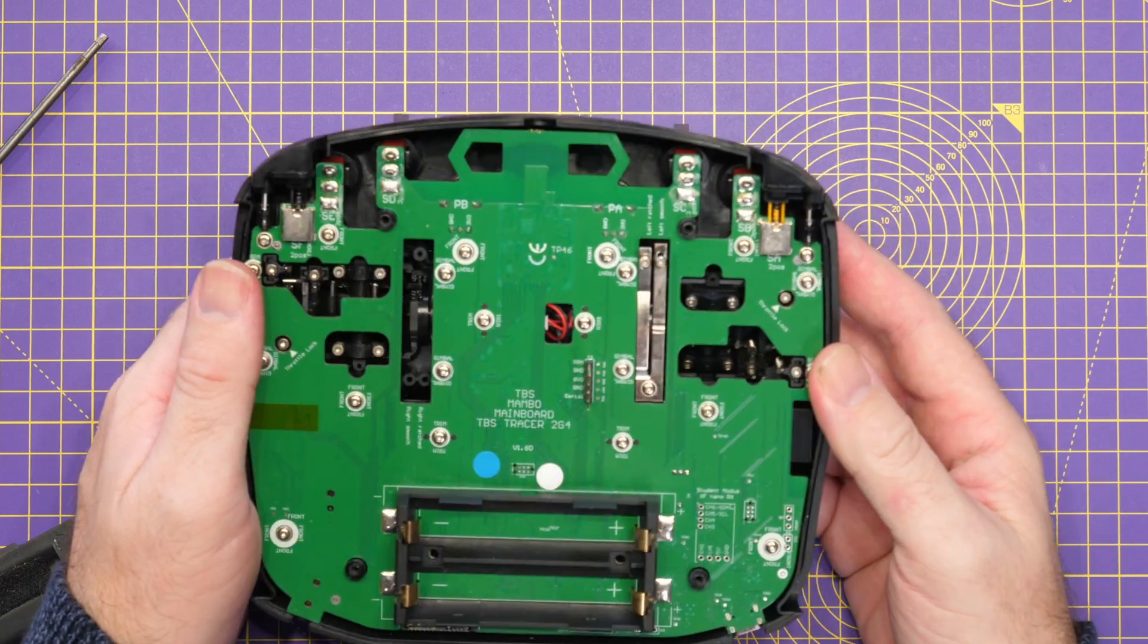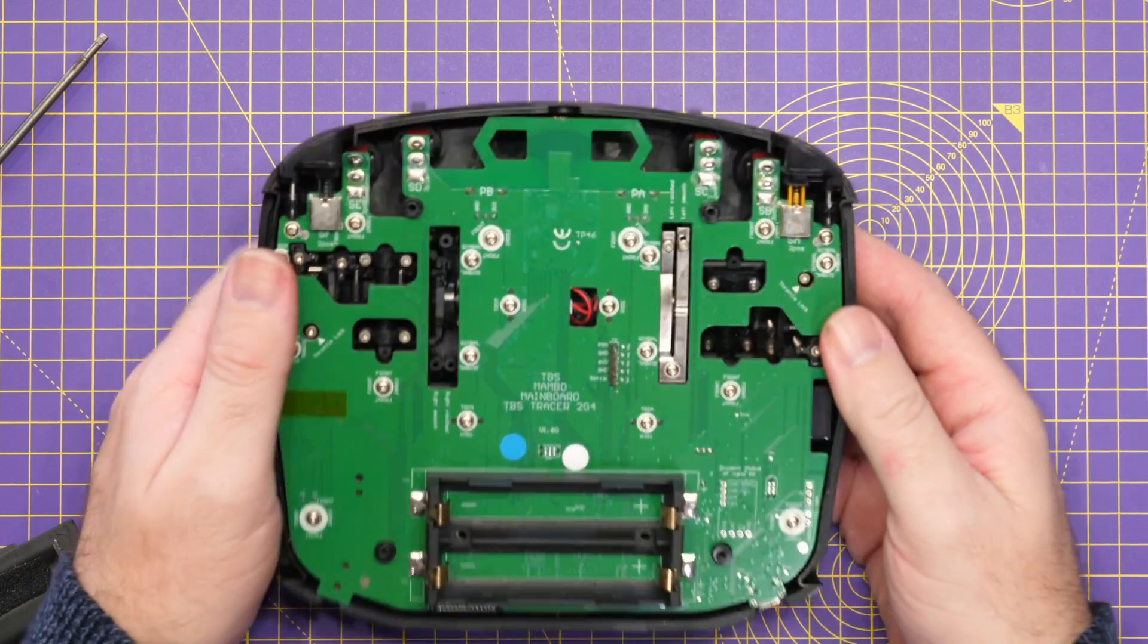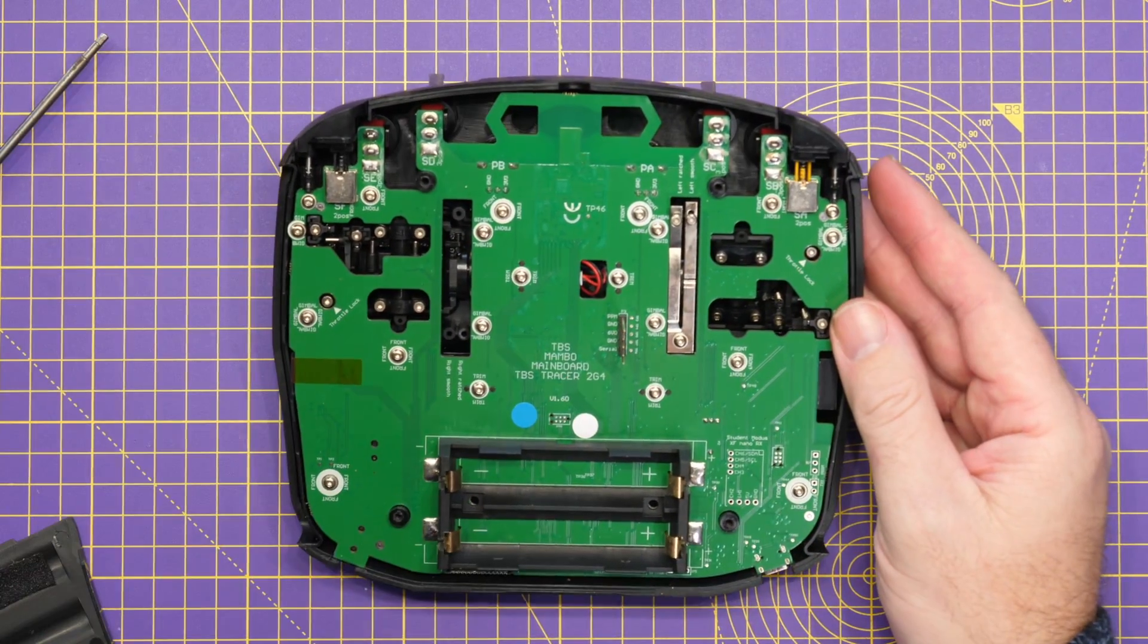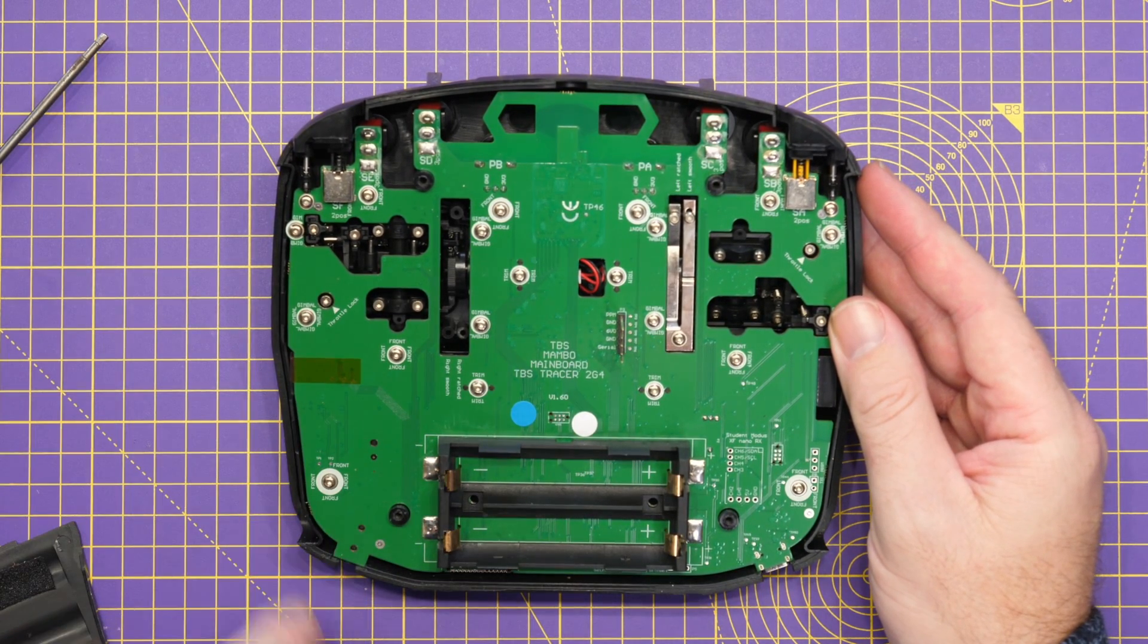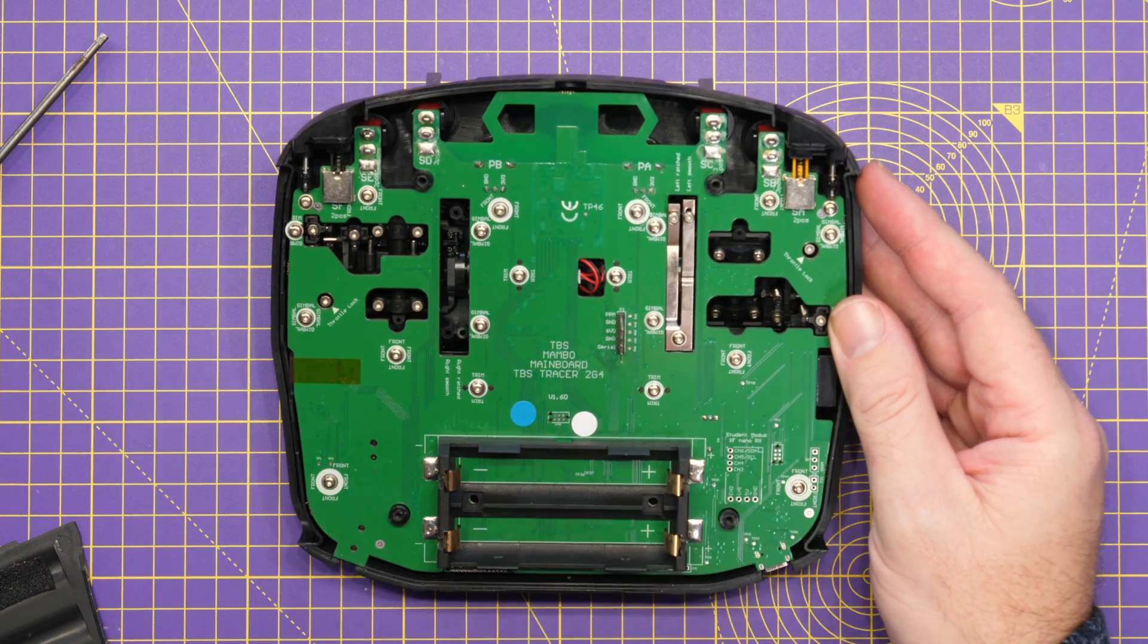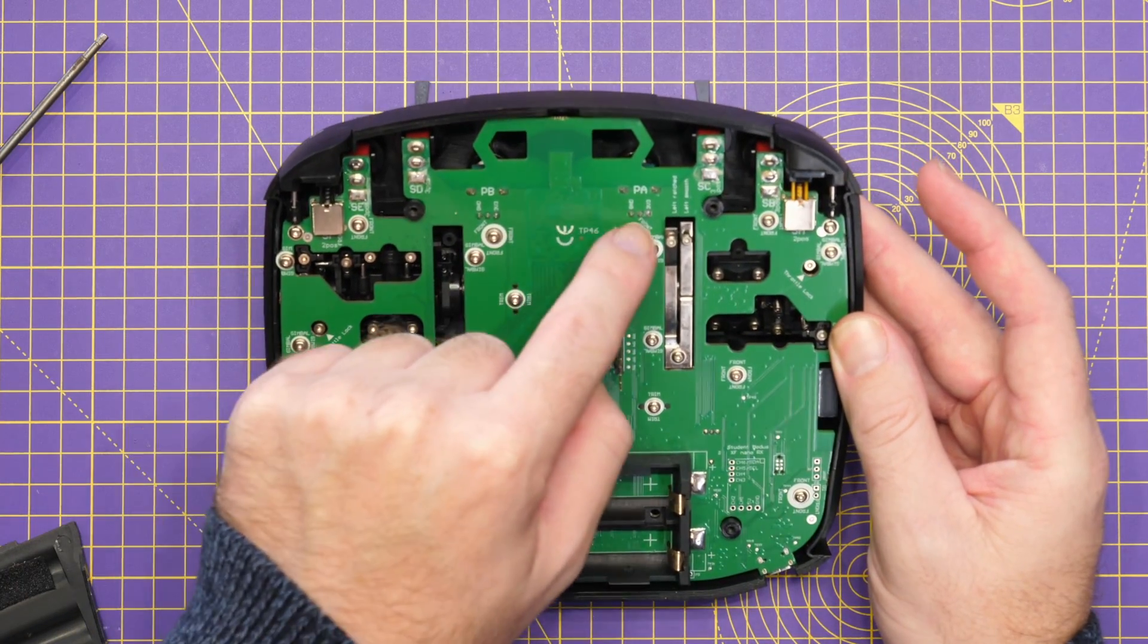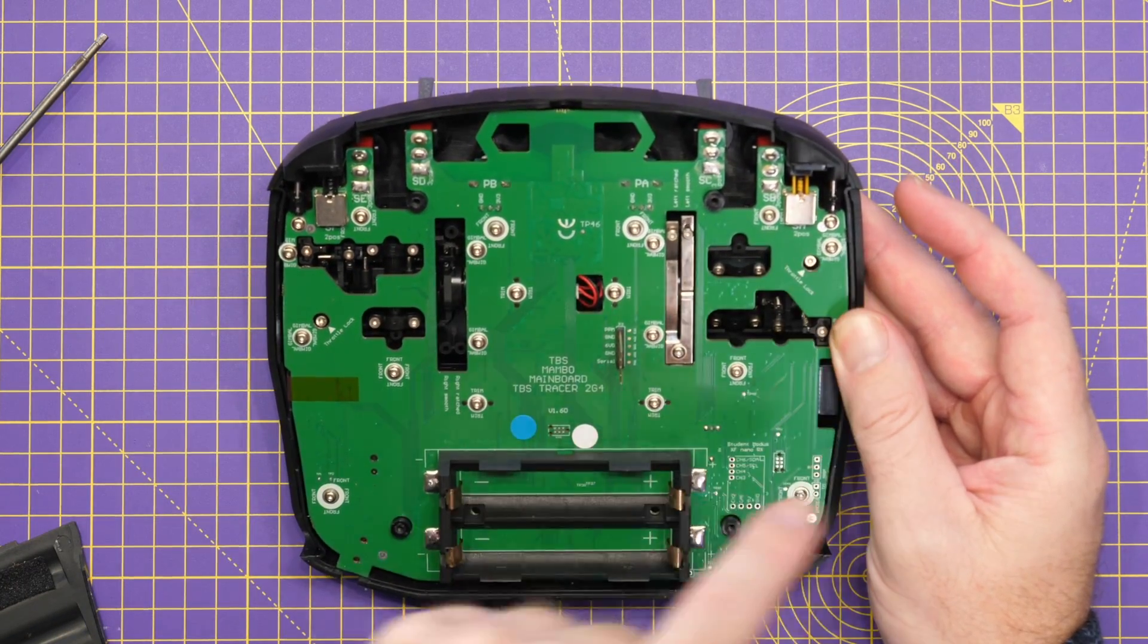Okay so we can see the gimbals are under this main PCB here. So what we're going to need to do is remove the screws. So you can see that we've got front, front, front, front, ones attached to the gimbal. So label this.